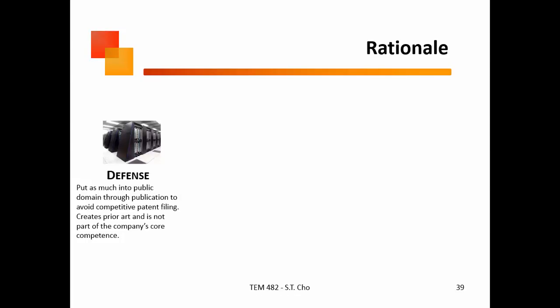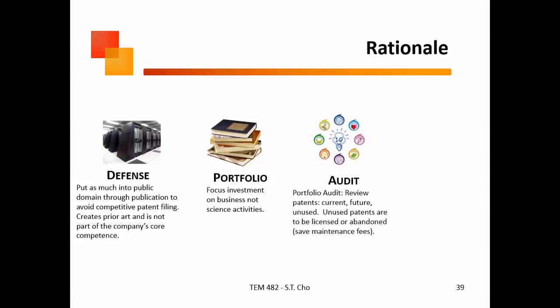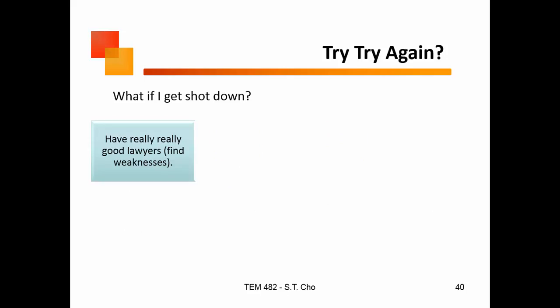Why do these types of things? You need defense — you need to establish what the state of the art is to prevent other people from coming after you. You have to look at this as part of a portfolio, not just one patent. You need to look at the whole body. Once you create a portfolio, you have to audit it — trim it and don't spend money on patents that have become outdated. Filing also buys you time internationally, because international patents are a much longer process. By doing your domestic patent first, you can figure out whether you want to pay the extra money for an international one.